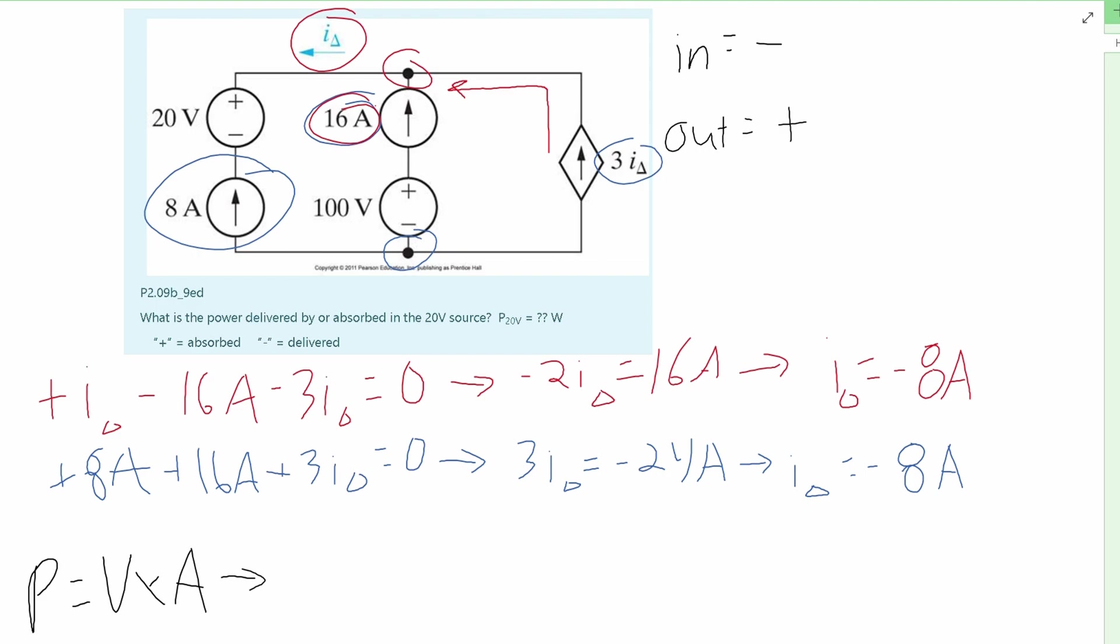Our P is going to be equal to the 20 volts, since it's asking us to find 20 volts. And now we plug in our current, which is going to be negative 8 amps. And from here we can see that power is equal to negative 160 watts. And this is the answer.